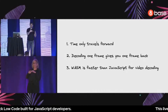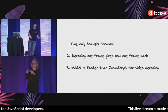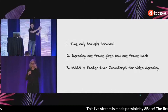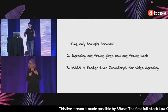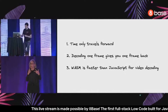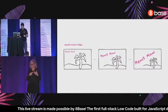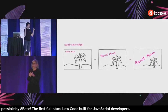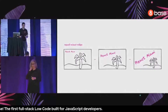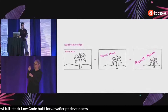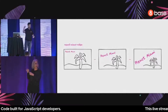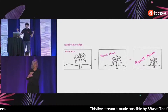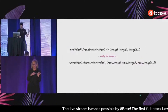For example, I felt like time only travels forward; I also assumed that decoding one frame gives you one frame back; and finally I thought that WebAssembly was faster than JavaScript for video decoding. In this talk I'm going to walk through all of that journey and explain why those three things I thought were true were not. Let's start by stating the problem: we have this React Miami video with some text, a palm tree that fades out, and the React Miami logo coming in.